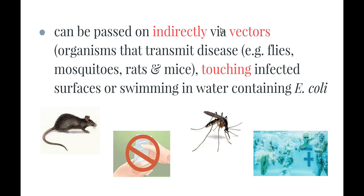Infectious diseases can also be passed on indirectly by vectors. Vectors are animals that transmit the disease. Some examples include flies, mosquitoes which carry malaria, rats which were known as transmitters of the black plague, and mice. Usually associated with animals we think are quite dirty and unclean — if we get bitten by them they pass those pathogens on to us. The animal itself isn't causing the disease; it is simply carrying the pathogen and passing it on to us.